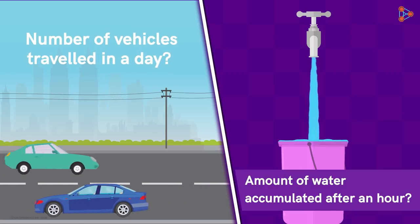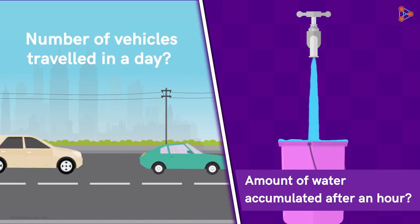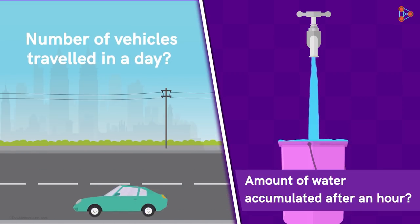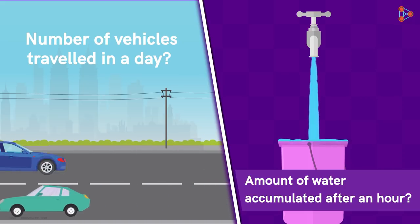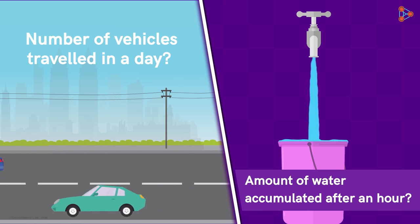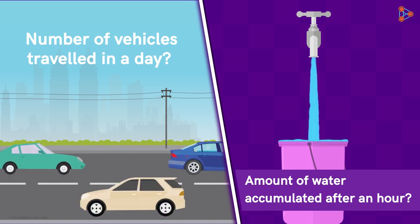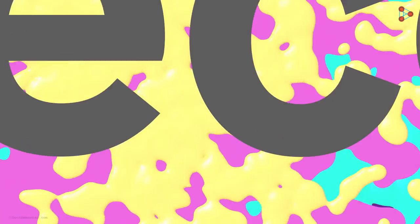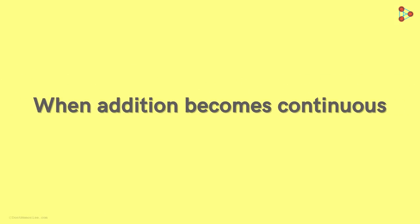We want to find the number of vehicles traveling on this road in a day. On a busy highway, we can think of the stream of vehicles as a continuous quantity like water. So we see that the problem could arise when we have to add a continuous quantity or even a discrete one.